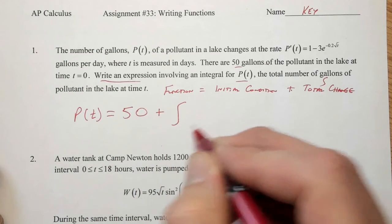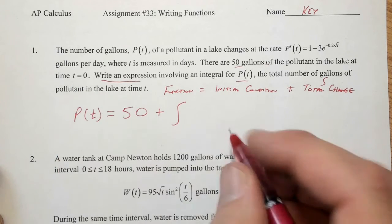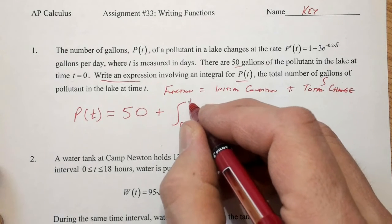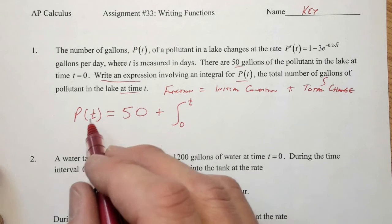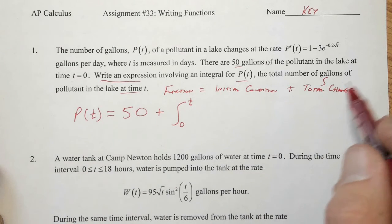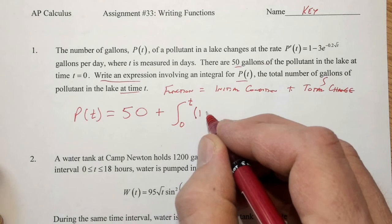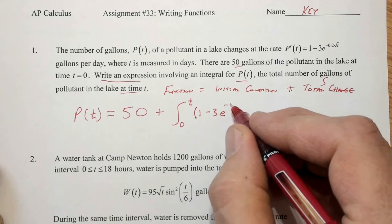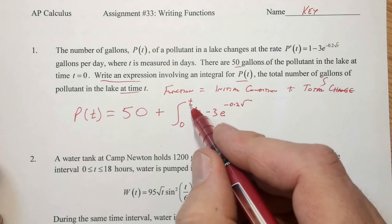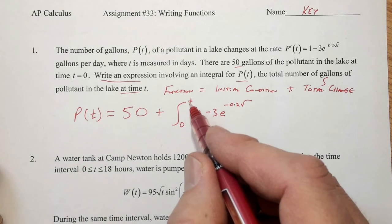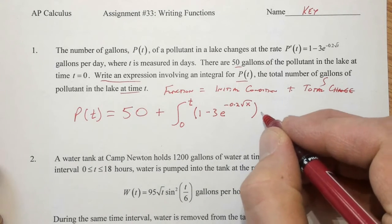And the total change is the integral from our starting time, we see our starting time is given to us to be 0, until whenever, whatever time we want, at any time T. So we have T as our upper bound. And this T matches with that T. And then the change, this is our change right here. So we're going to have 1 minus 3E to the negative 2 tenths square root. And then we have to use a variable other than T because T has been used already in terms of the integral bounds. So we just go back and forth, usually between T and X. So we have square root of X, dx.